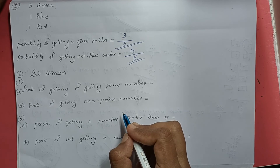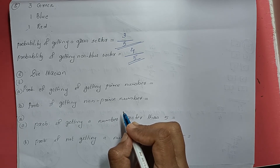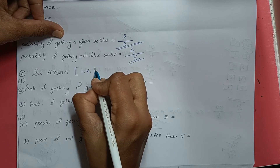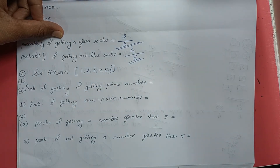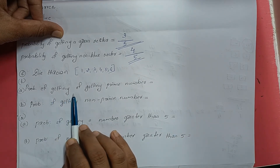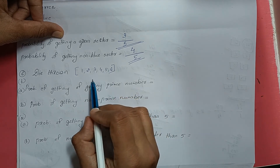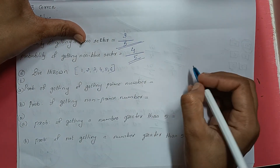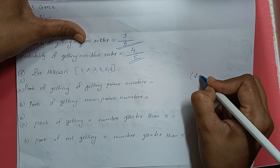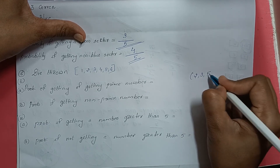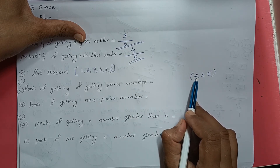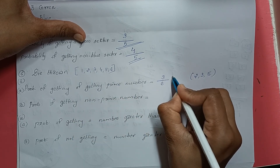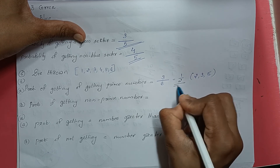Question number 6: Find the probability of the events given in question number 2. When throwing a die, we get 1, 2, 3, 4, 5, or 6. Probability of getting a prime number: prime numbers are 2, 3, and 5 — that is 3 numbers — divided by total outcomes which is 6. Three by six simplifies to 1 by 2. So the probability is 1 by 2.